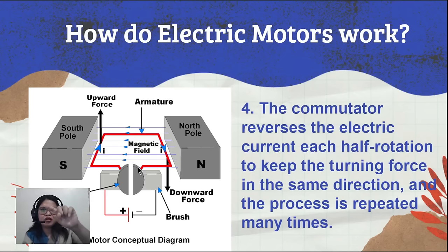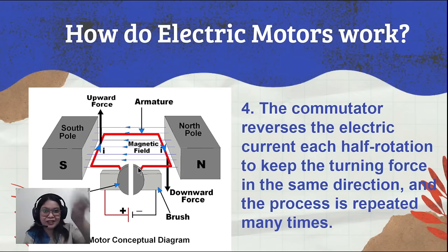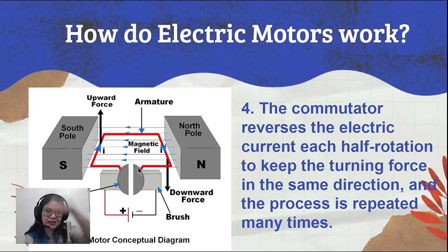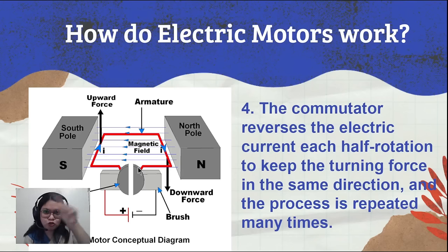The process is repeated many times. The turning force needs to be continuous — you never see an electric fan rotating one way and then reversing. It always goes in one direction. To keep that happening, the commutator reverses the electric current every half rotation so the movement of the armature remains continuous.